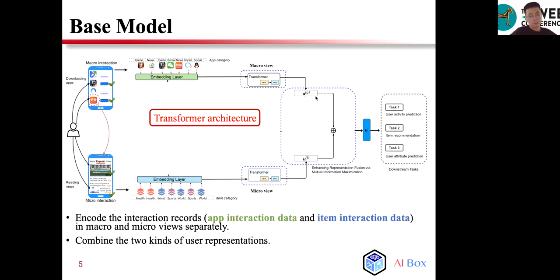First, we develop the base model based on the Transformer architecture, which has been shown to be effective in modeling temporal interaction data. The basic idea is to first encode the interaction records, such as app interaction data and the item interaction data in macro and micro views, and then combine the two kinds of user representations.